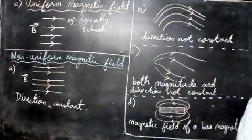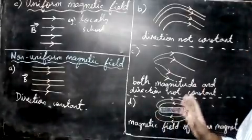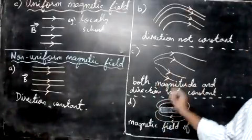But if you take a bar magnet, you compare it, it is not uniform. So these things are about the uniform and non-uniform magnetic field.